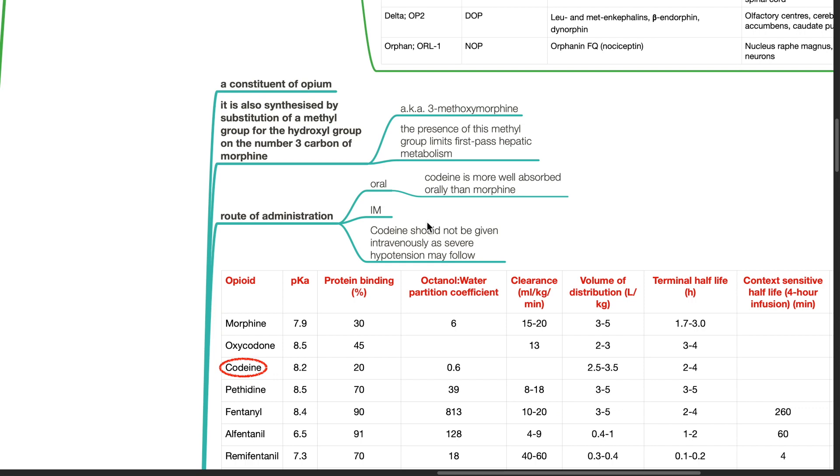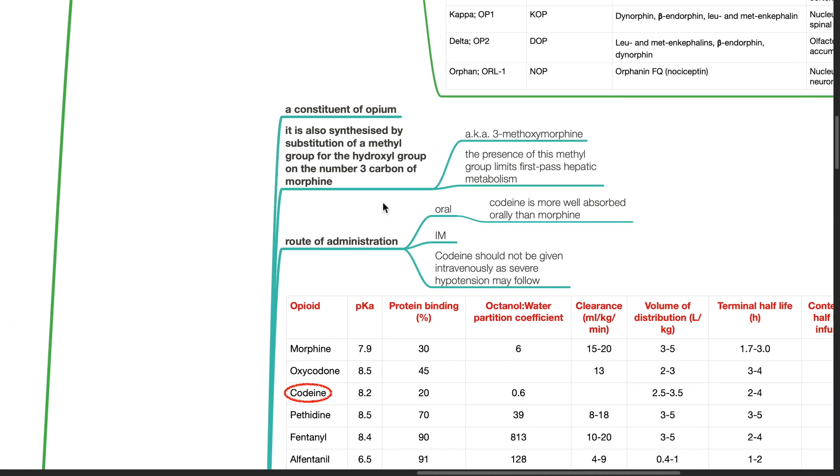Codeine is a constituent of opium. It is also synthesized by substitution of a methyl group for the hydroxyl group on the number 3 carbon of morphine. It is also known as 3-methoxymorphine. The presence of this methyl group limits first-pass hepatic metabolism.